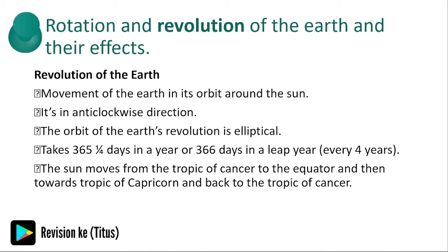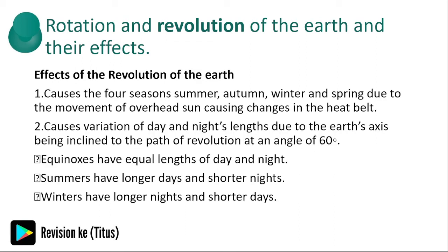The revolution of the earth is the movement of the earth in its orbit around the sun, in an anticlockwise direction. The earth takes 365 and a quarter days in a year to complete one revolution. Effects of revolution: it causes the four seasons — summer, autumn, winter, and spring. It causes variation in the length of day and night due to the earth's axis being inclined to the path of revolution at an angle of 66.5 degrees.